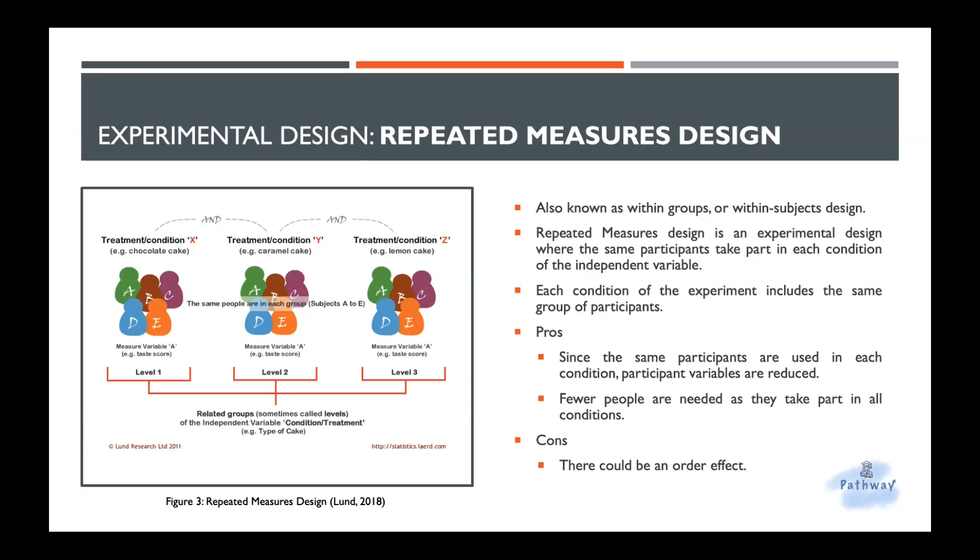Let's review again. Repeated measures is basically the same group of people doing different conditions. But independent is just two different sets, or it could be more than two, just different groups of people doing different tasks. So independent is just basically two groups with completely different people, and each group has different independent variables. And the repeated measures design is just basically the same people with different IVs.